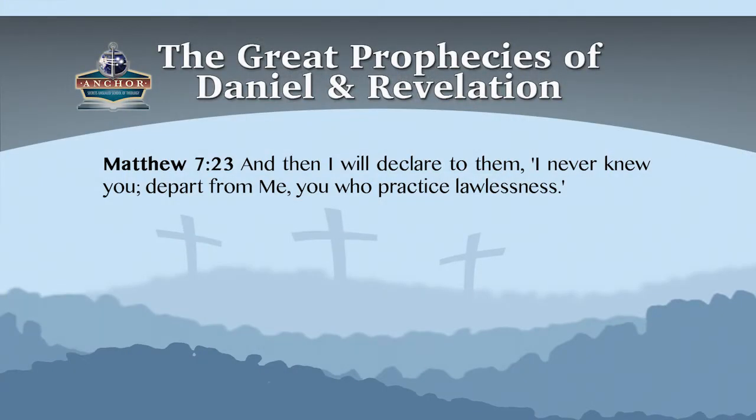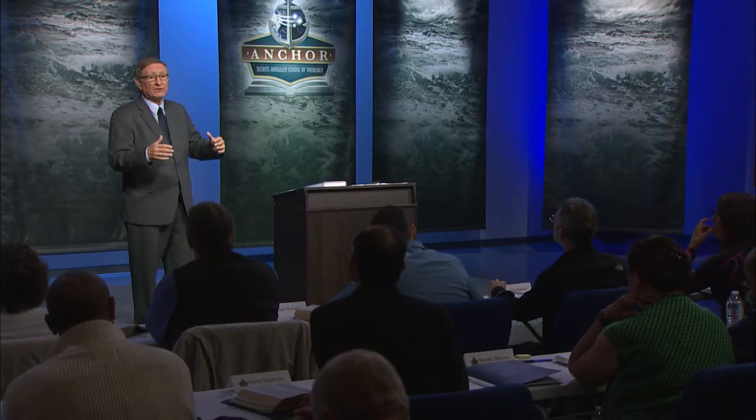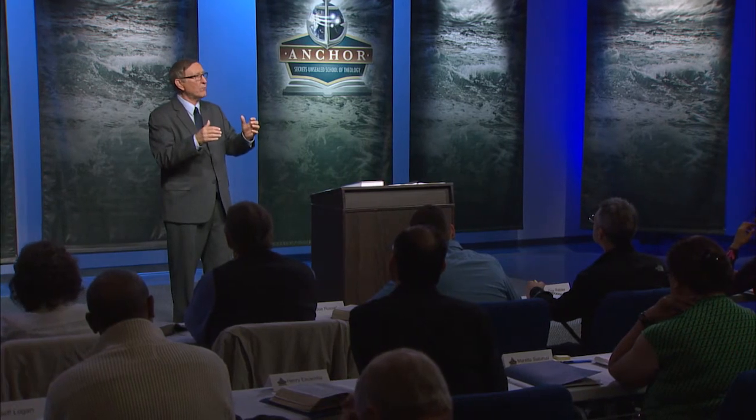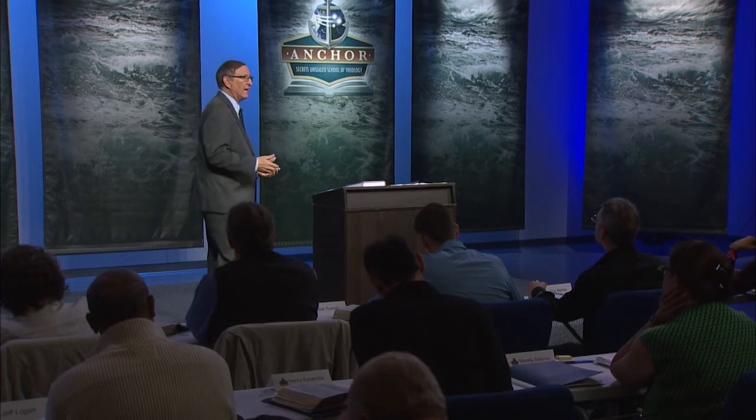Matthew 7, verse 23 says: 'And then I will declare to them, I never knew you. Depart from me, you who practice lawlessness' — that's the word anomios. It's very important to realize that in Matthew chapter 7, verse 23, the word translated 'lawlessness' is the same word in 1 John 3:4, where it says that sin is the transgression of the law. The new King James says 'lawlessness,' so anomios means someone who is contrary to the law.